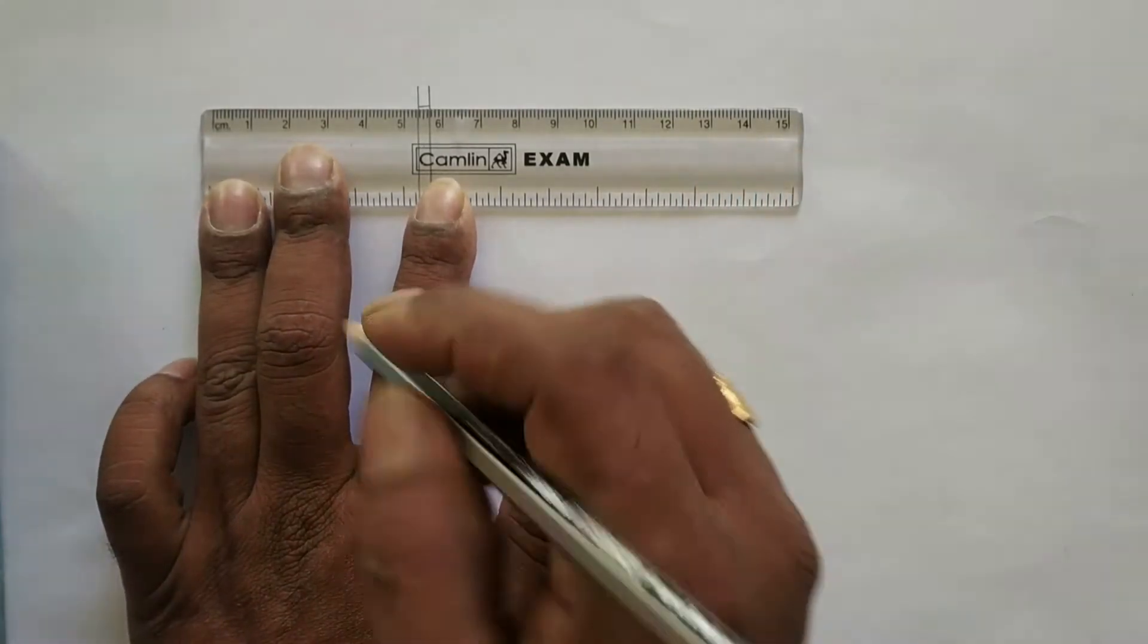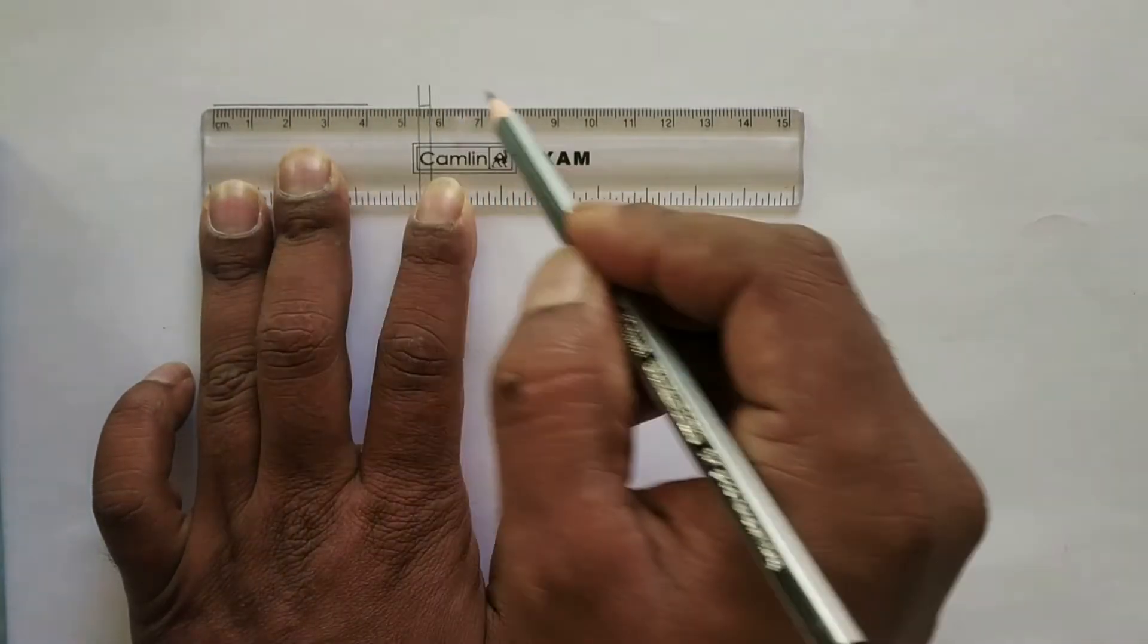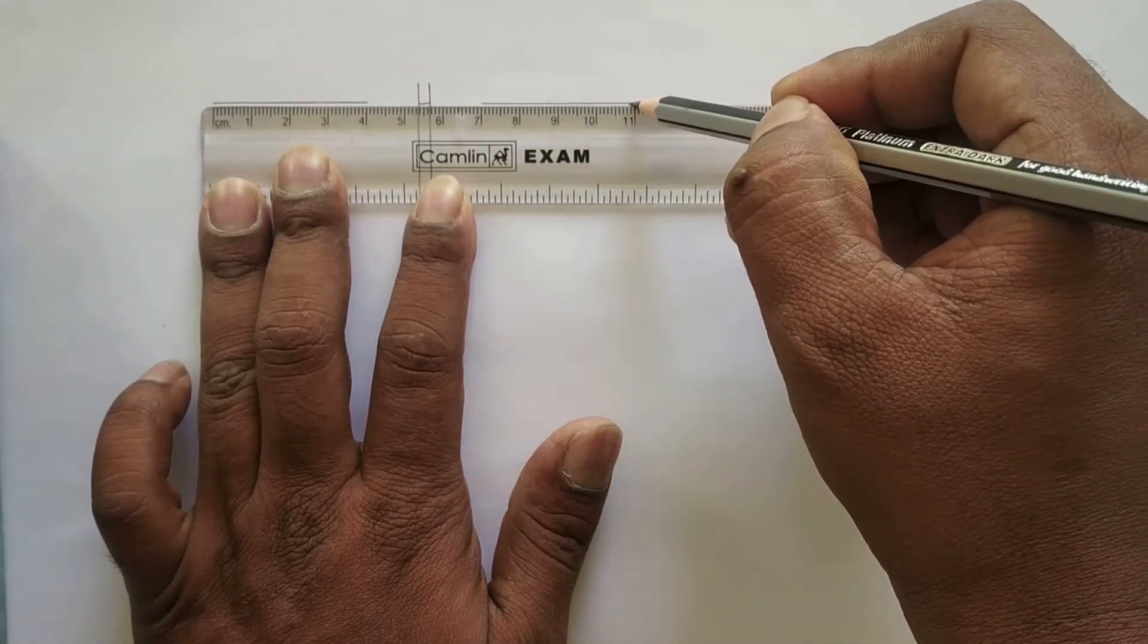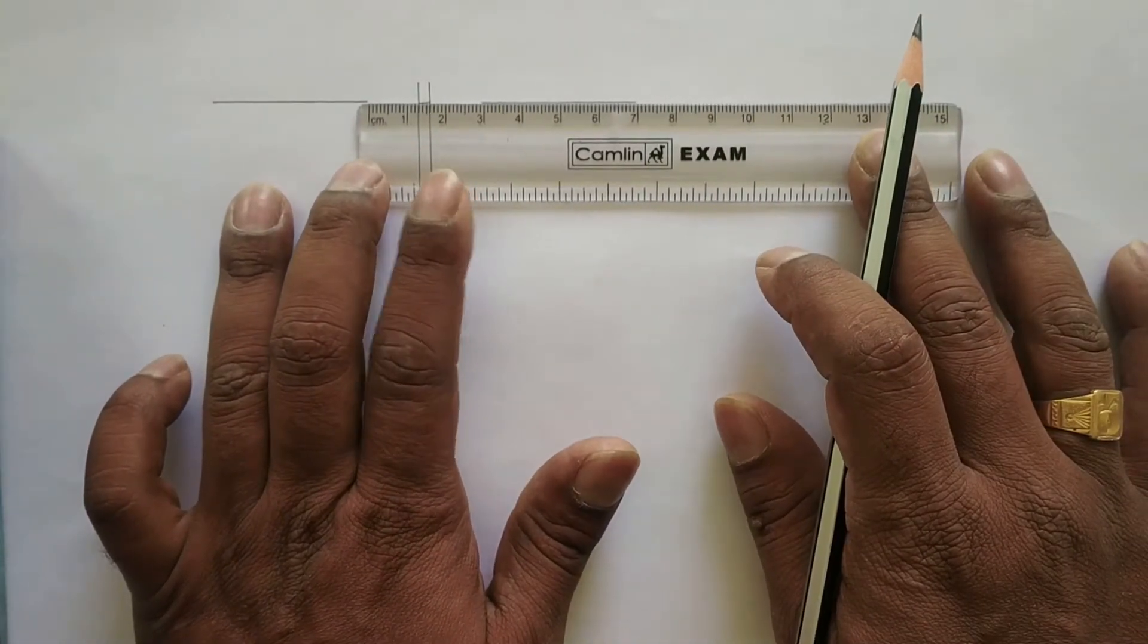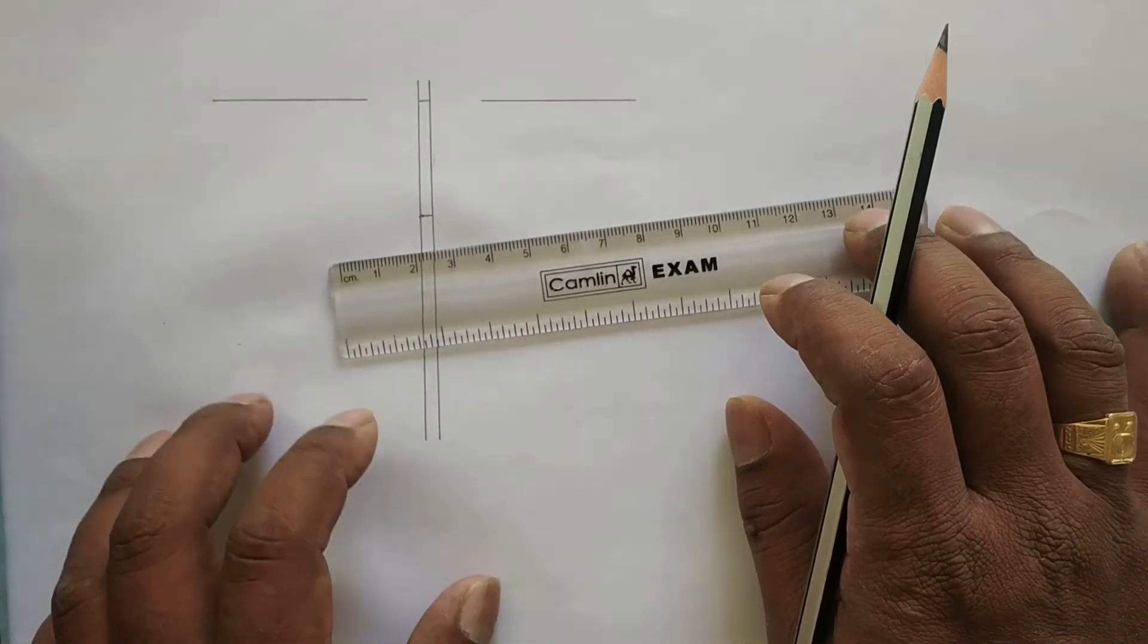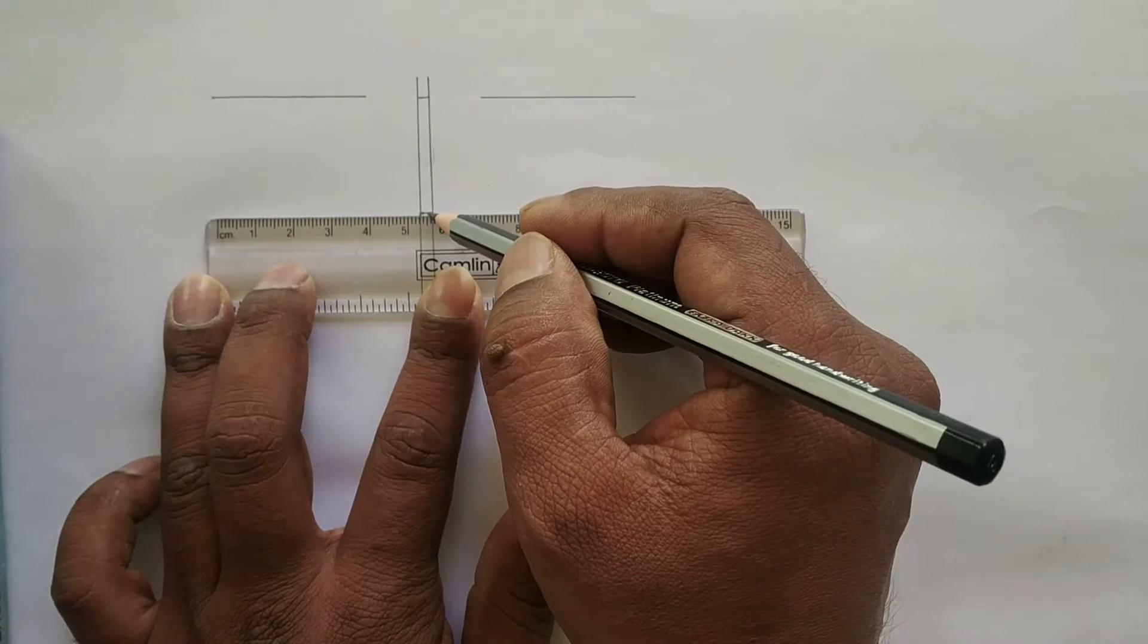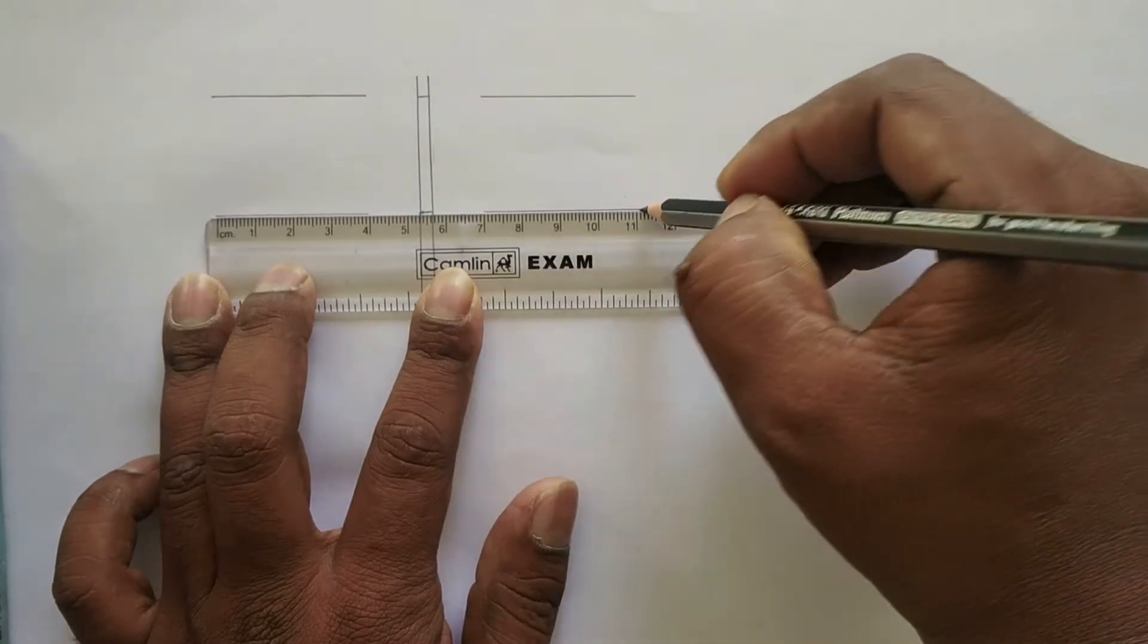Draw a straight line from here to here, 4 centimeter, again from 7 centimeter to 11 centimeter so that you get around 3 centimeter in the middle. You have to do the same here at the bottom where 3 centimeter is marked, from 1 to 4 and 7 to 11.